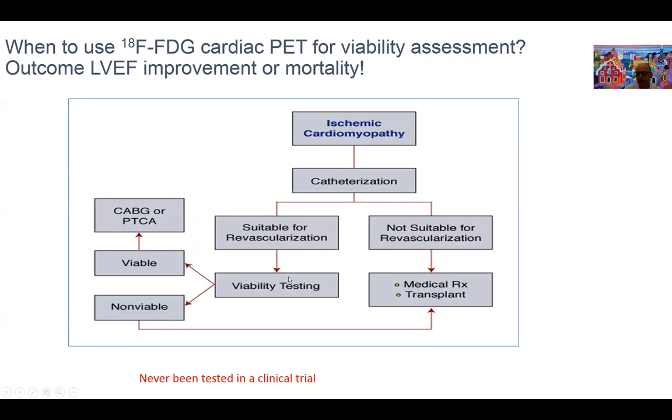This is a schema or diagram that I use very often in my practice. It's never been tested clinically in a clinical trial, but at least it makes sense. We have ischemic myocardium suspected. I usually send patients for cardiac cath, or these days probably CTA if suitable. If they're not suitable for revascularization because the coronaries are normal or because you have severe diffuse disease, we treat these patients medically or send them for transplant.